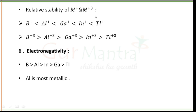Next is electronegativity. In comparison to s-block elements, group 13 elements are more electronegative due to higher effective nuclear charge. Exceptionally, aluminium is the most metallic among them, and you should memorize the correct order of electronegativity for this group.